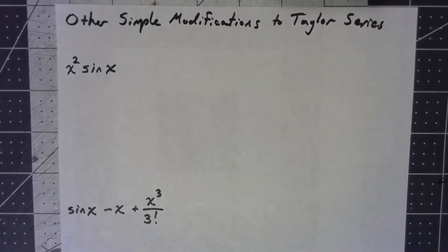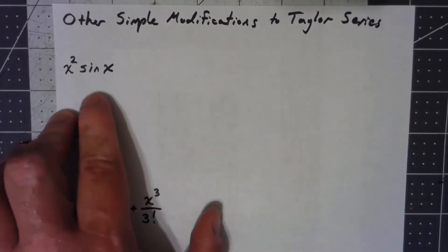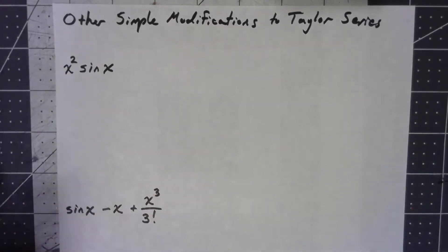Let's talk about a few more ways that we can modify power series. Last time we talked about substitution, but this isn't a substitution here. I just have sine of x, but it's times x squared.